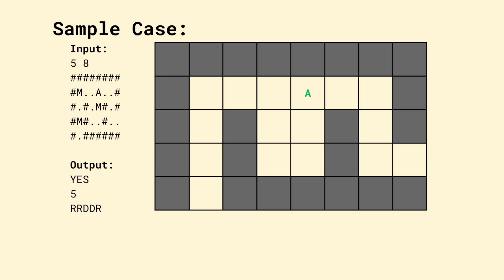Let's take a look at our sample case. We have 5 rows and 8 columns. The person is marked in green. For the monsters, I've gone ahead and replaced them with monsters we are all familiar with.